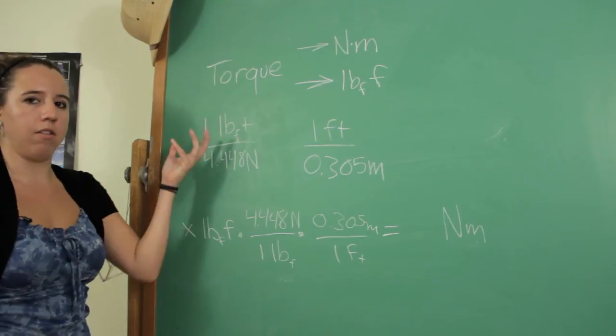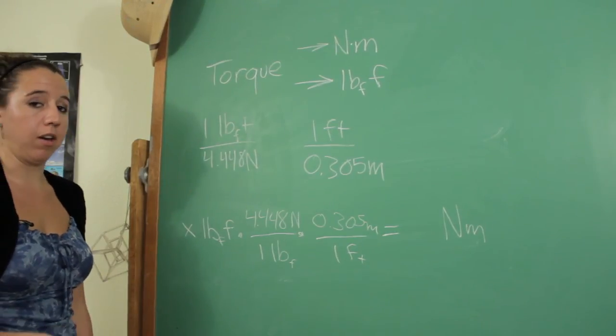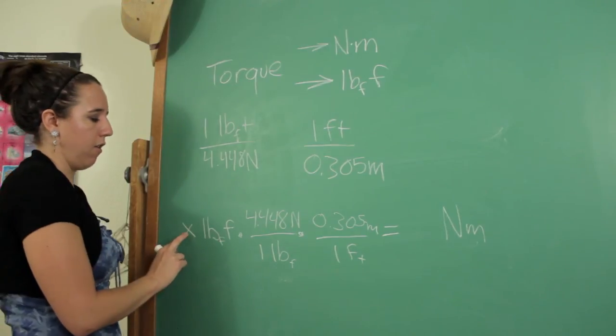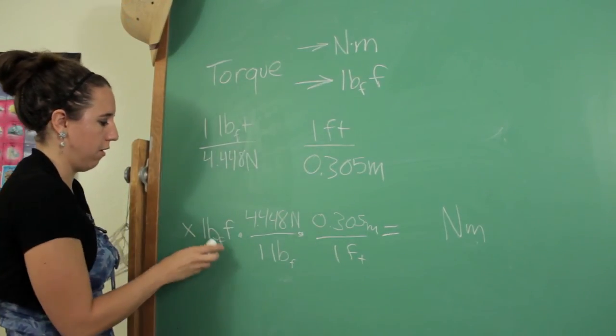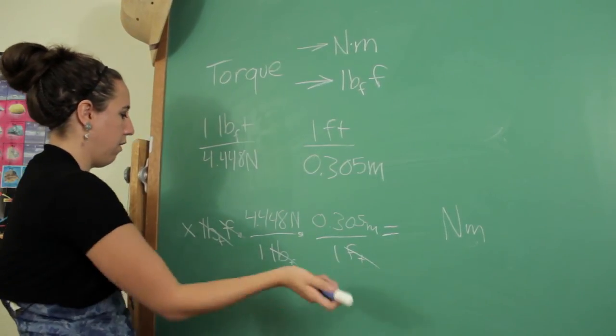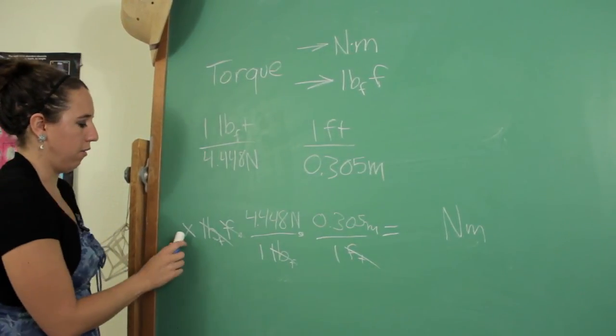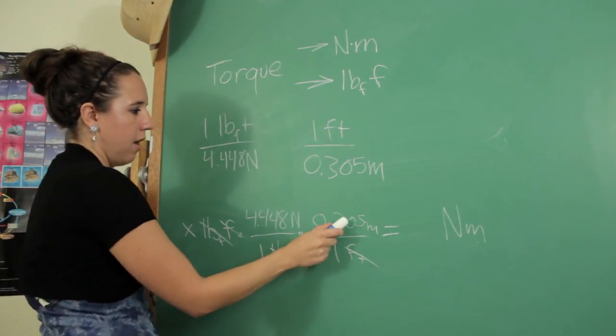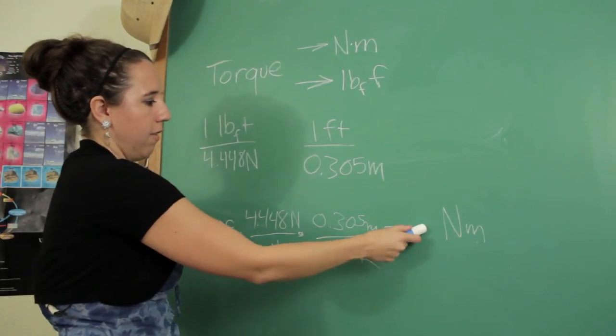So because this is a factor, it doesn't really matter what's on top or bottom and we're going to use that to our advantage when doing this. So you have the number that you're given that you have to convert. All your conversion factors, make sure that that cancels and that cancels. You have ones on the bottom. So essentially you're going to take whatever number you're trying to convert, multiply it by that and that and that is going to be your number.